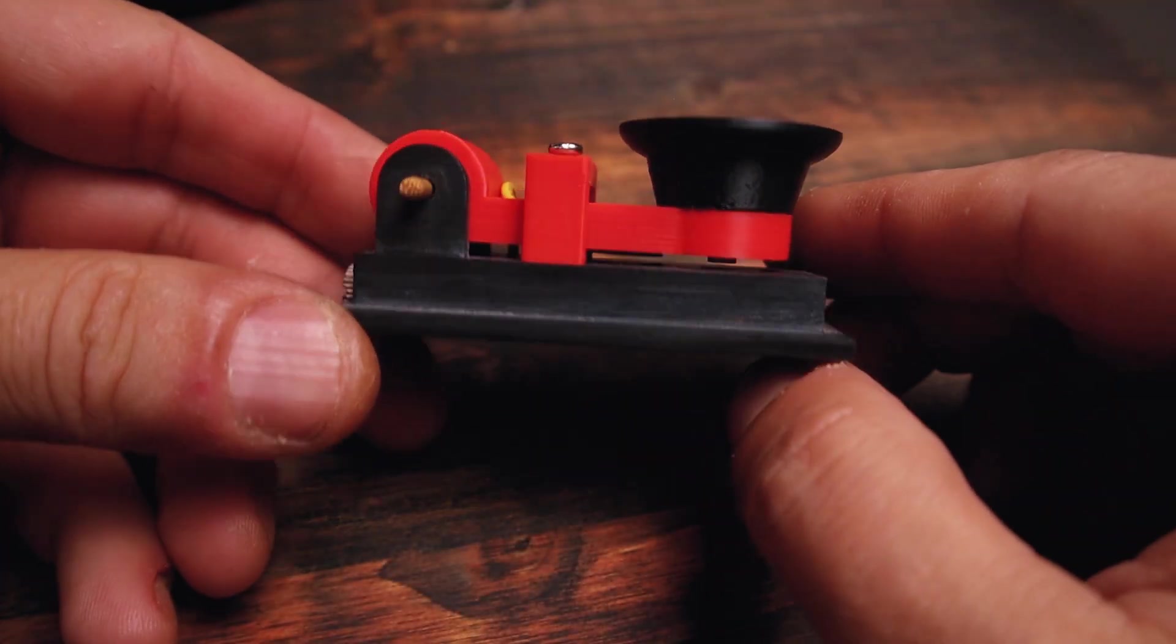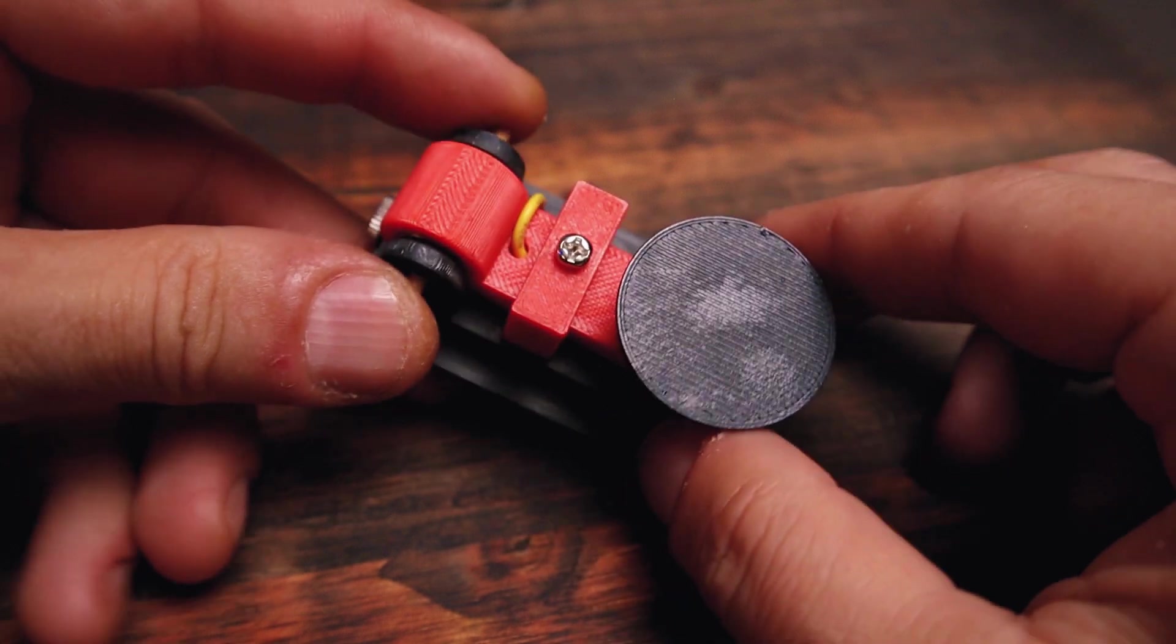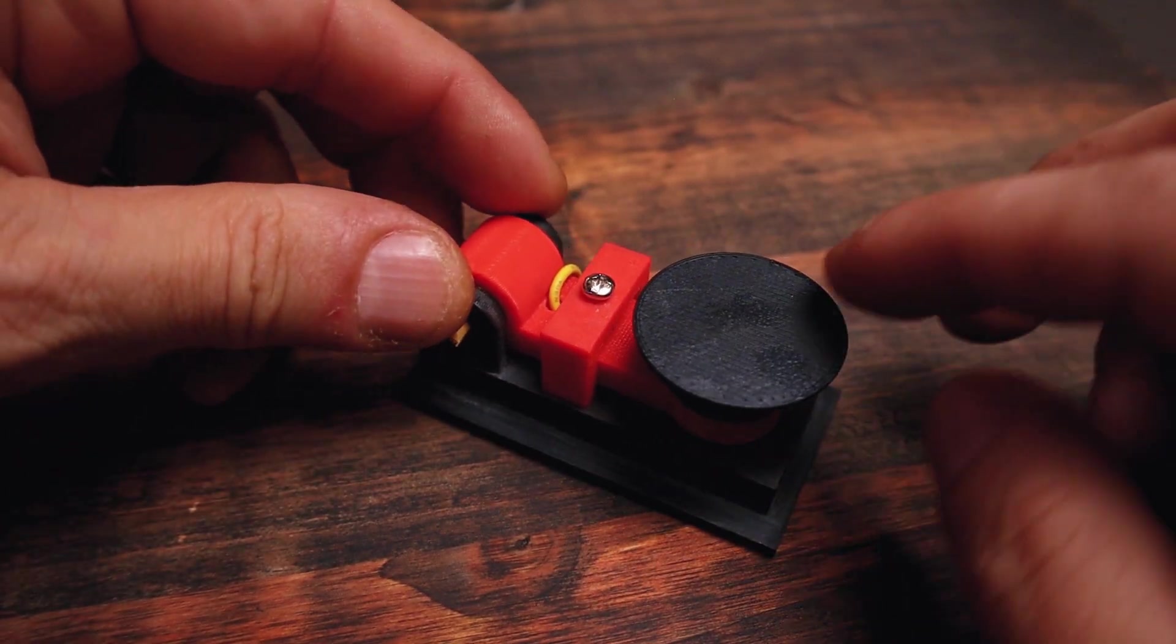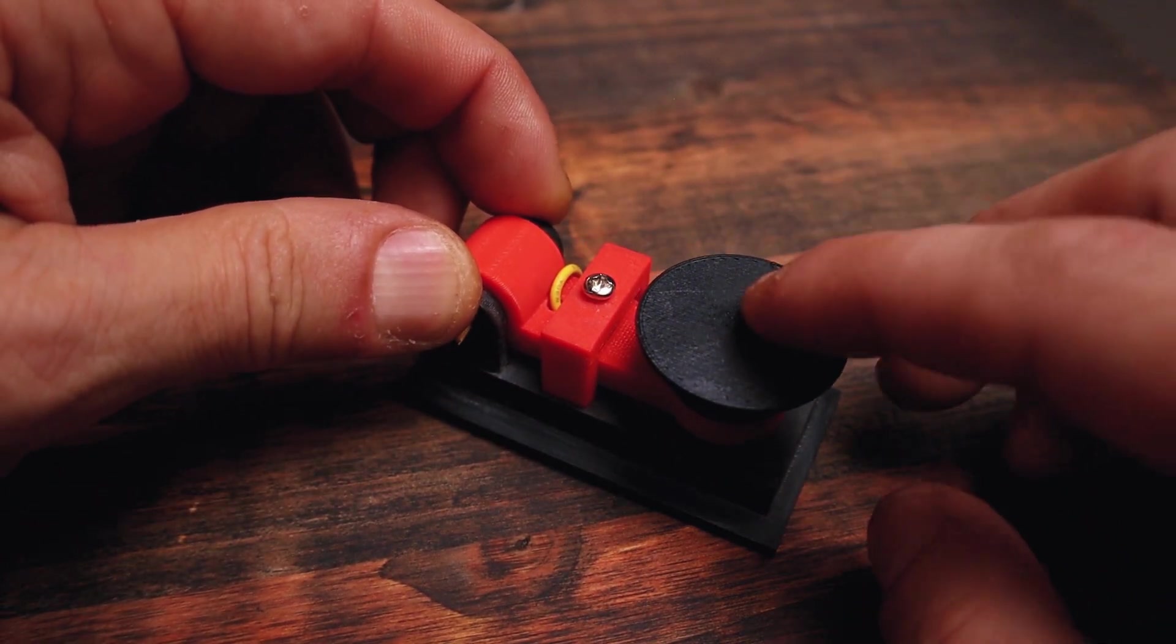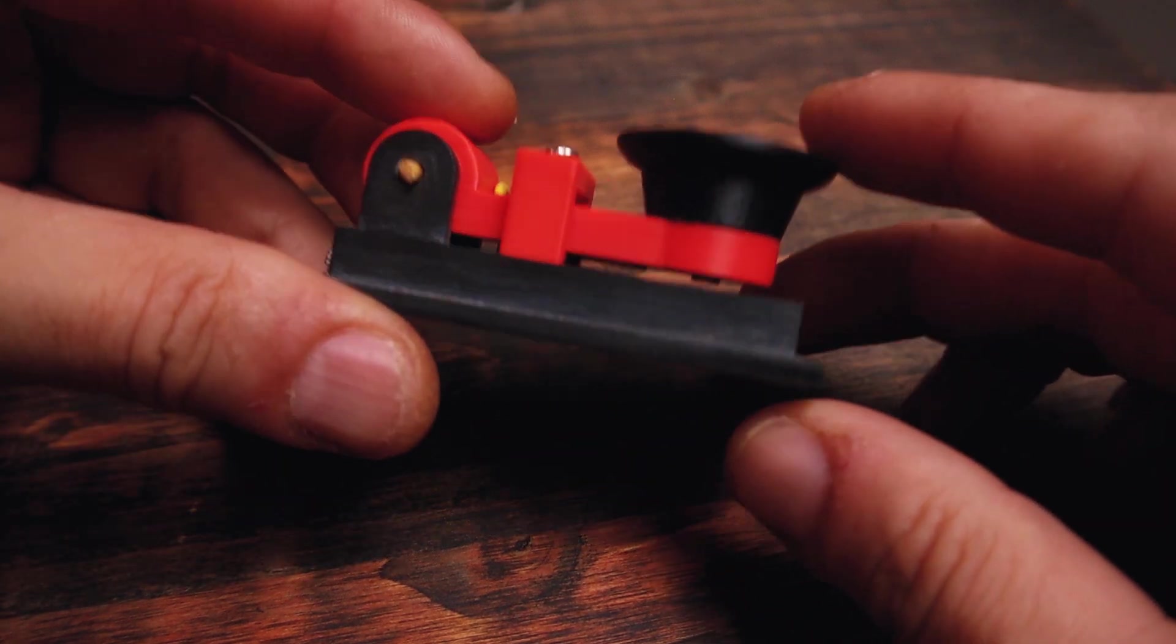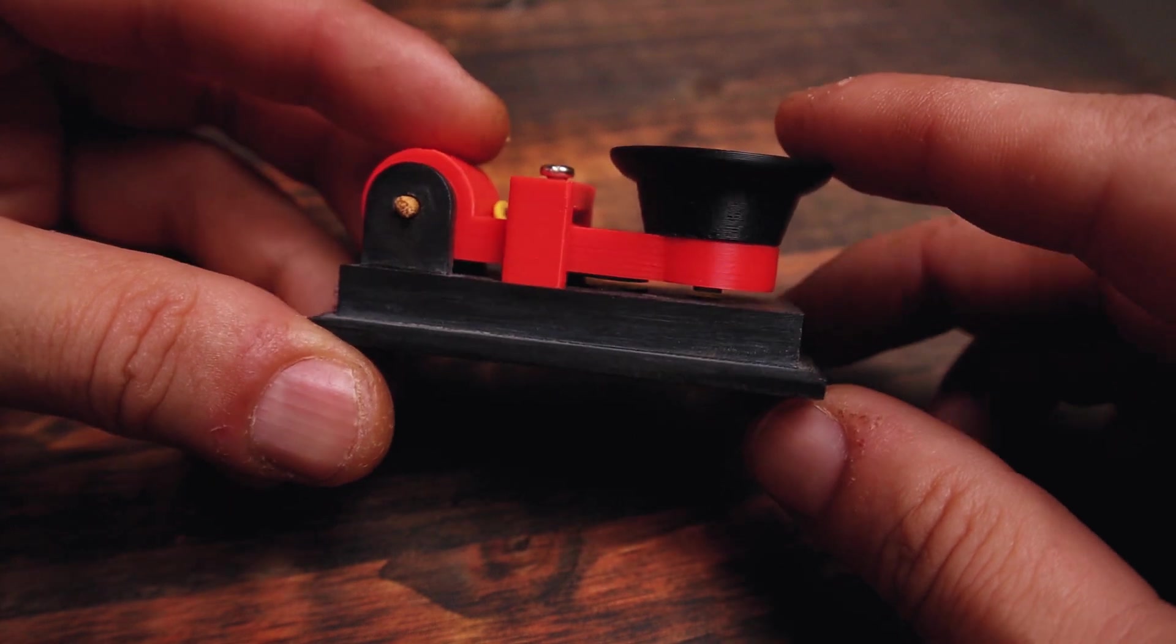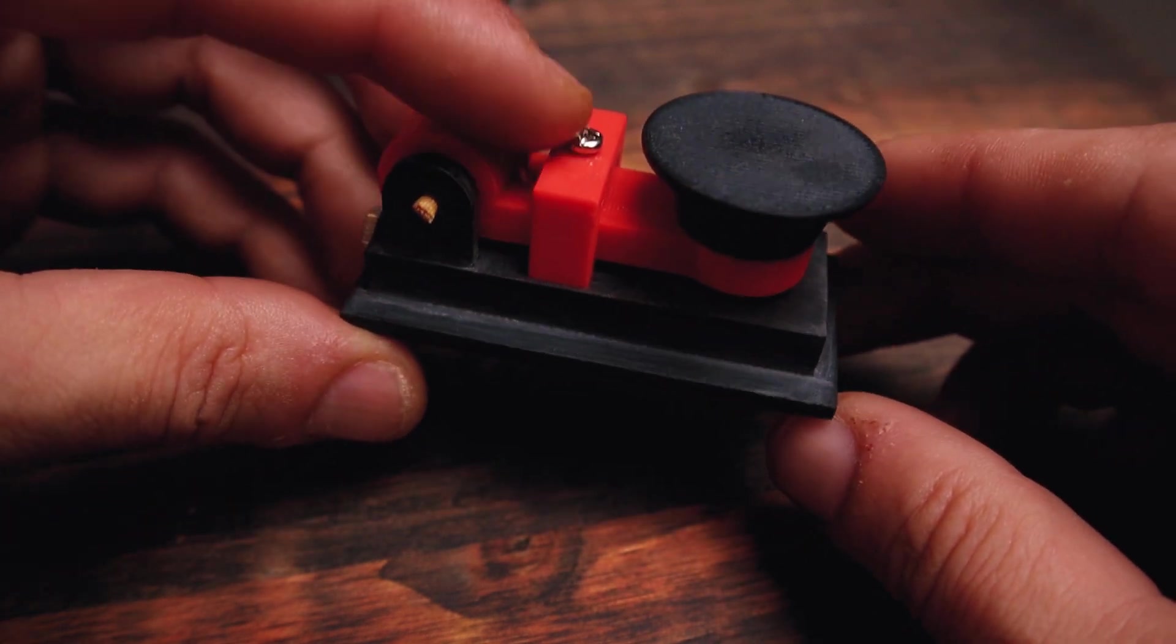All right here we are, this is the tiny and cute CW key. It works fantastic and I'll show you really quick just now. You can adjust the height, the action basically of the key with this screw over here.